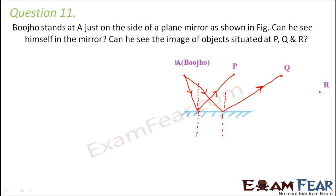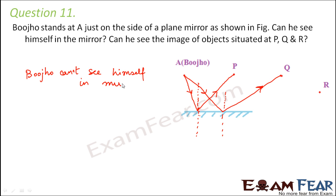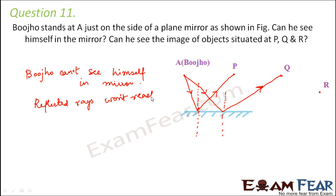The reflected ray will always go in this direction and Bujo is standing here, so the reflected ray will never reach Bujo's eyes. Therefore Bujo can't see himself in the mirror — because the reflected rays won't reach his eyes.